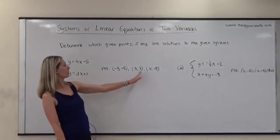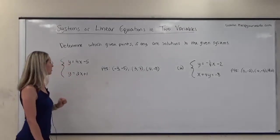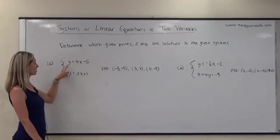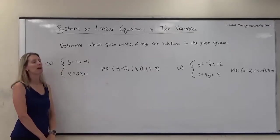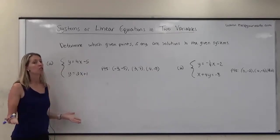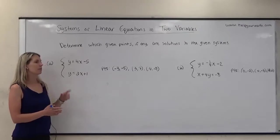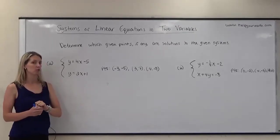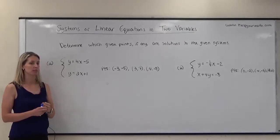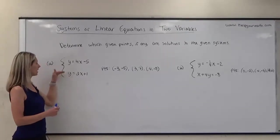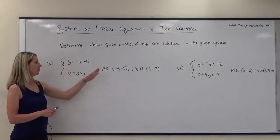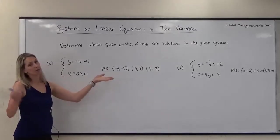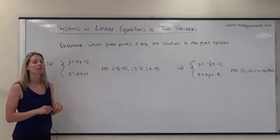We're given three points for our first system of equations. The equations are y equals 4x minus 5 and y equals 2x plus 1. Based on the last video, we do know that there is one solution to this particular system because the slopes are different. Whether it's one of these three, I don't know — let's find out.